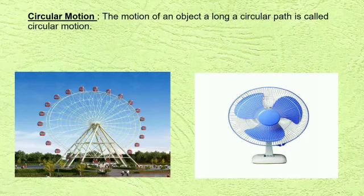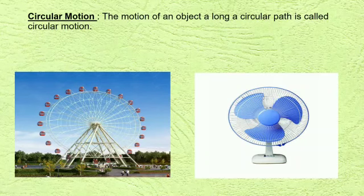Circular motion: the motion of an object along a circular path is called circular motion. The hand of a clock moves in a circular manner. Similarly, a fan, a giant wheel, and a merry-go-round complete each round along a circular route. For example, motion of a giant wheel, motion of the hand of the clock, and motion of the blade of the fan are examples of circular motion.